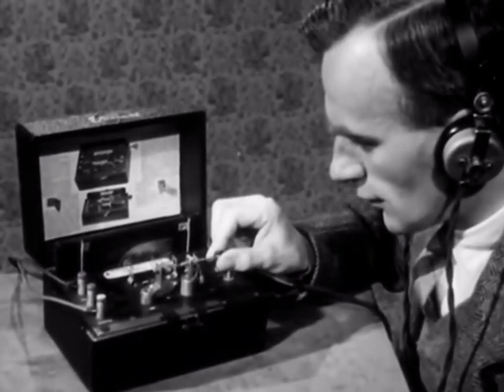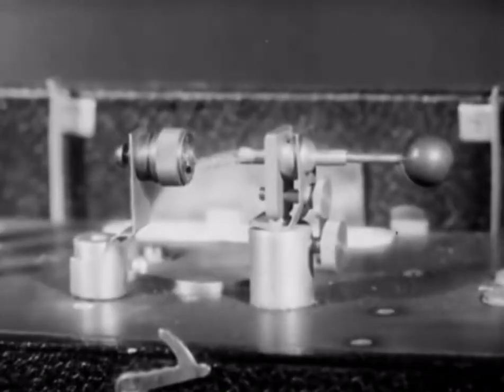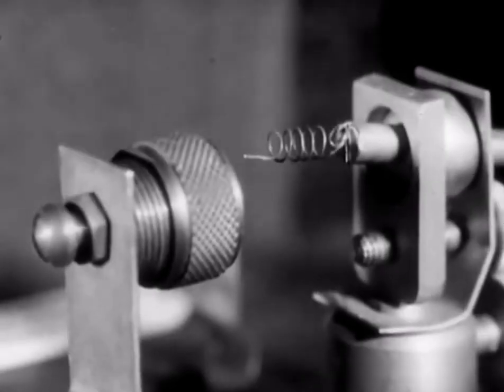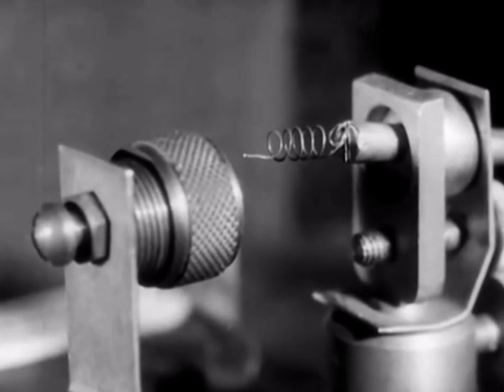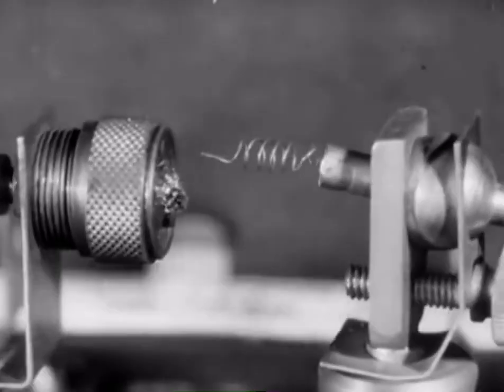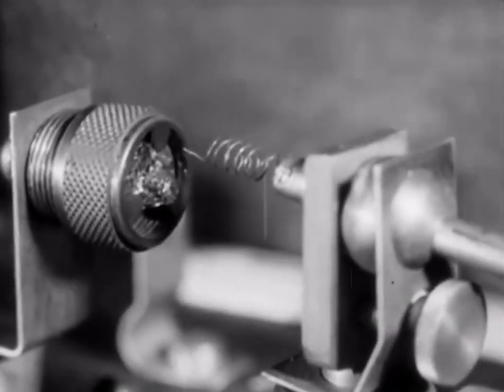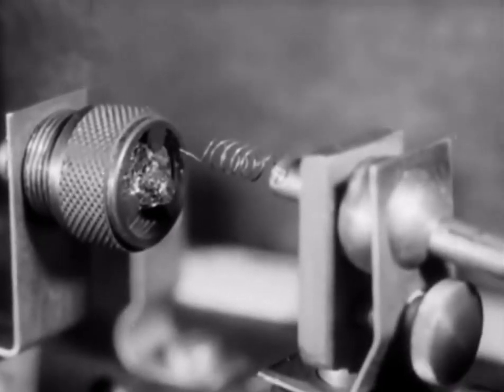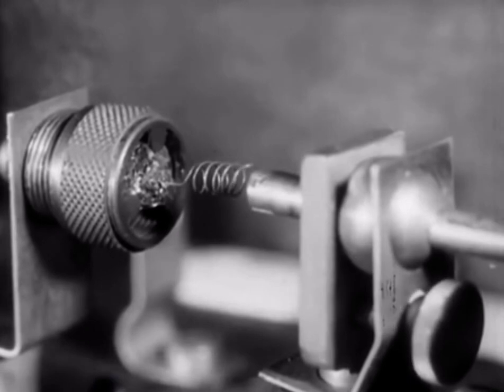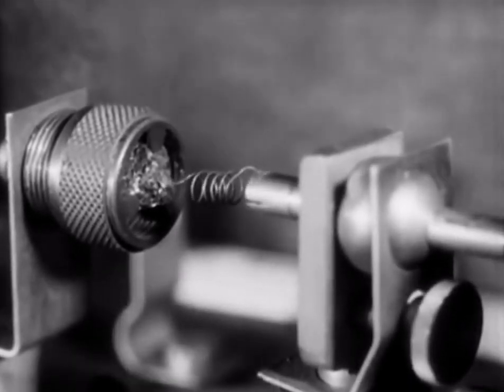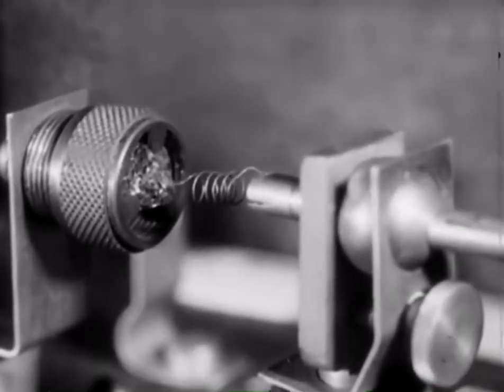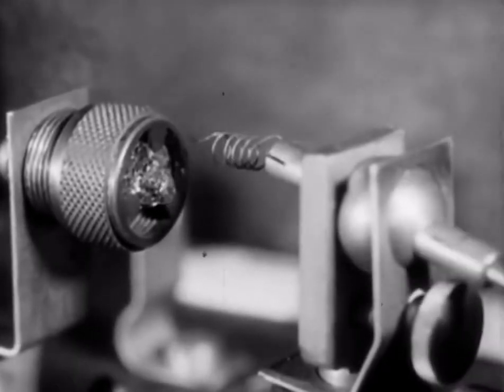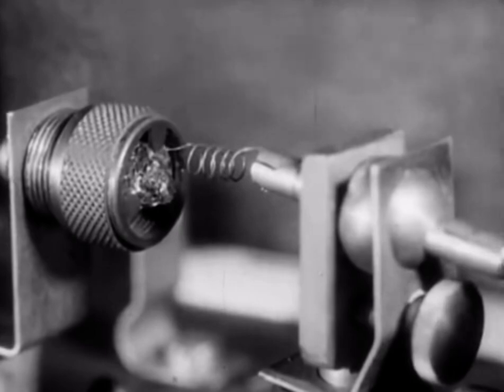This receiver is called a crystal set because it uses a crystal detector. It consists of a coiled springy silver wire known as the cat's whisker and a crystalline substance such as the natural mineral galena. When the cat's whisker touches certain parts of the crystal, the apparatus allows an electric current to flow more freely in one direction than the other. In other words, it rectifies or detects alternating current.